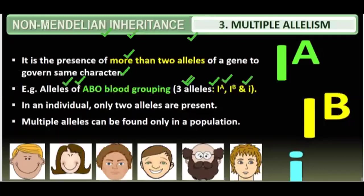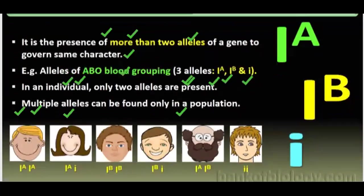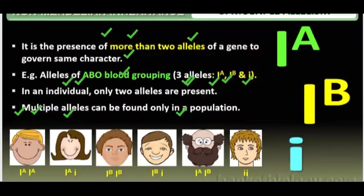In an individual, only two alleles are present. Multiple alleles can only be found in a population — suppose if we are taking a population, we will get multiple alleles. But in one individual, there are two genes. In one characteristic, in one organism, there are two alleles present. But in the case of skin color, there are more than three alleles.